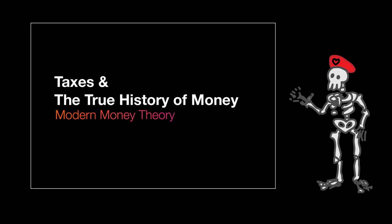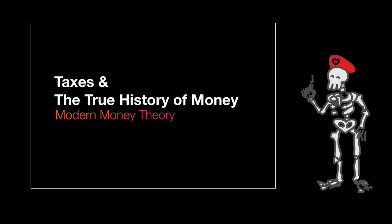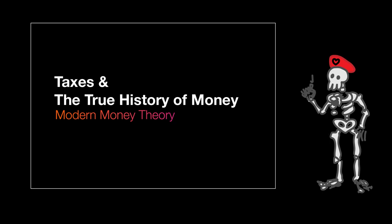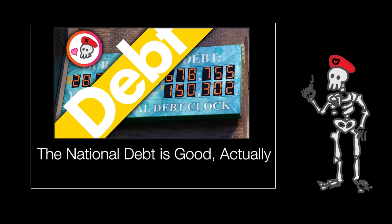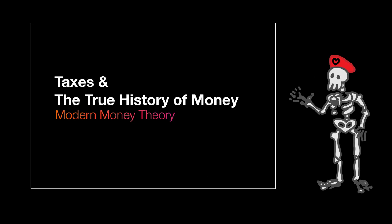Welcome to Economists Are Dumb, hosted by me, an economist. In this episode, I'll answer the question that I'll pretend you asked: why do we pay taxes? The answer seems obvious — how else would the government pay for things? But if you've seen the previous video in my series on money, you'll know that governments don't actually use tax dollars to pay for things. I left that video on a cliffhanger by not explaining why we pay taxes, and this video is the answer.